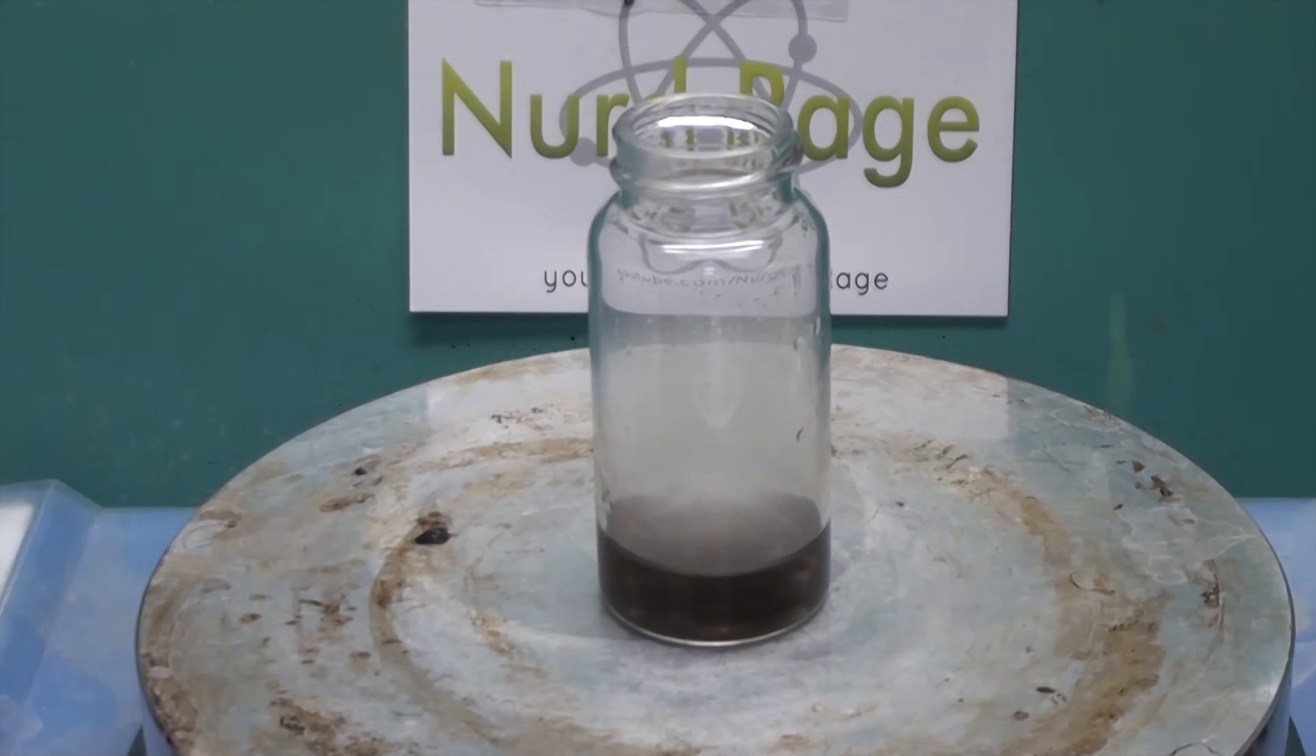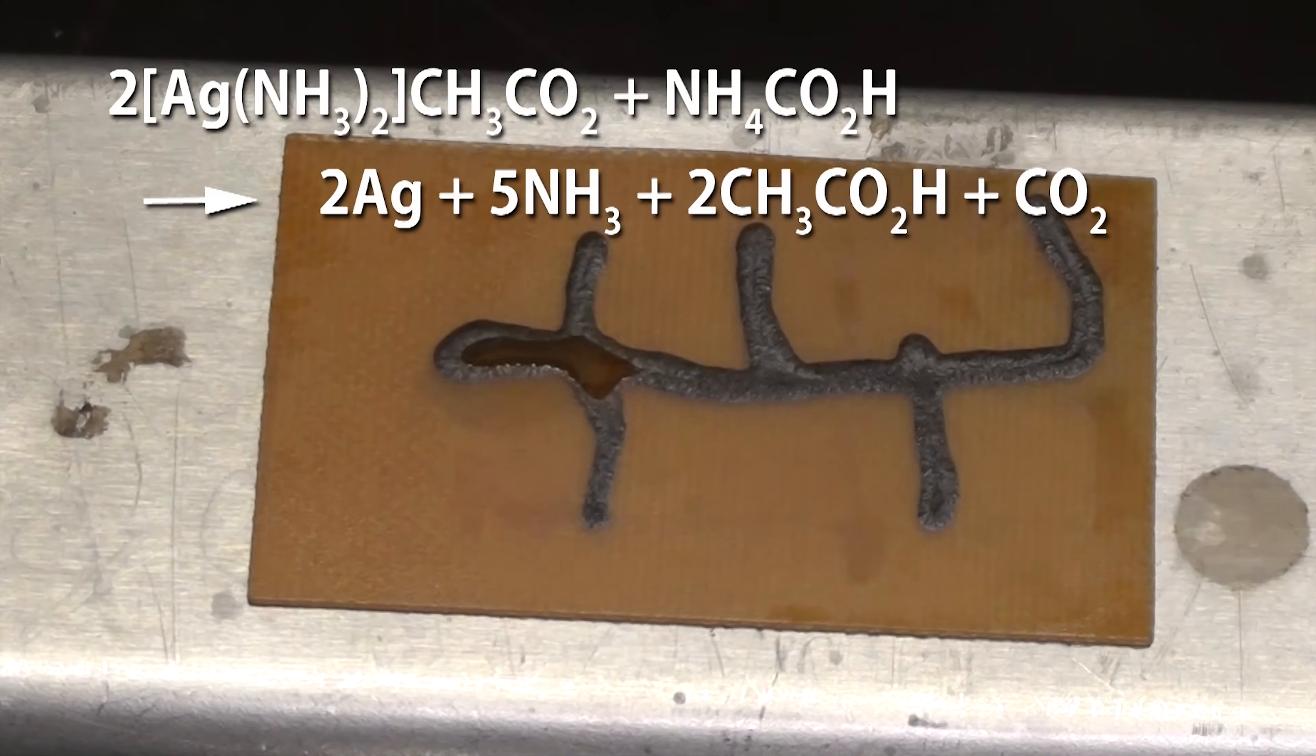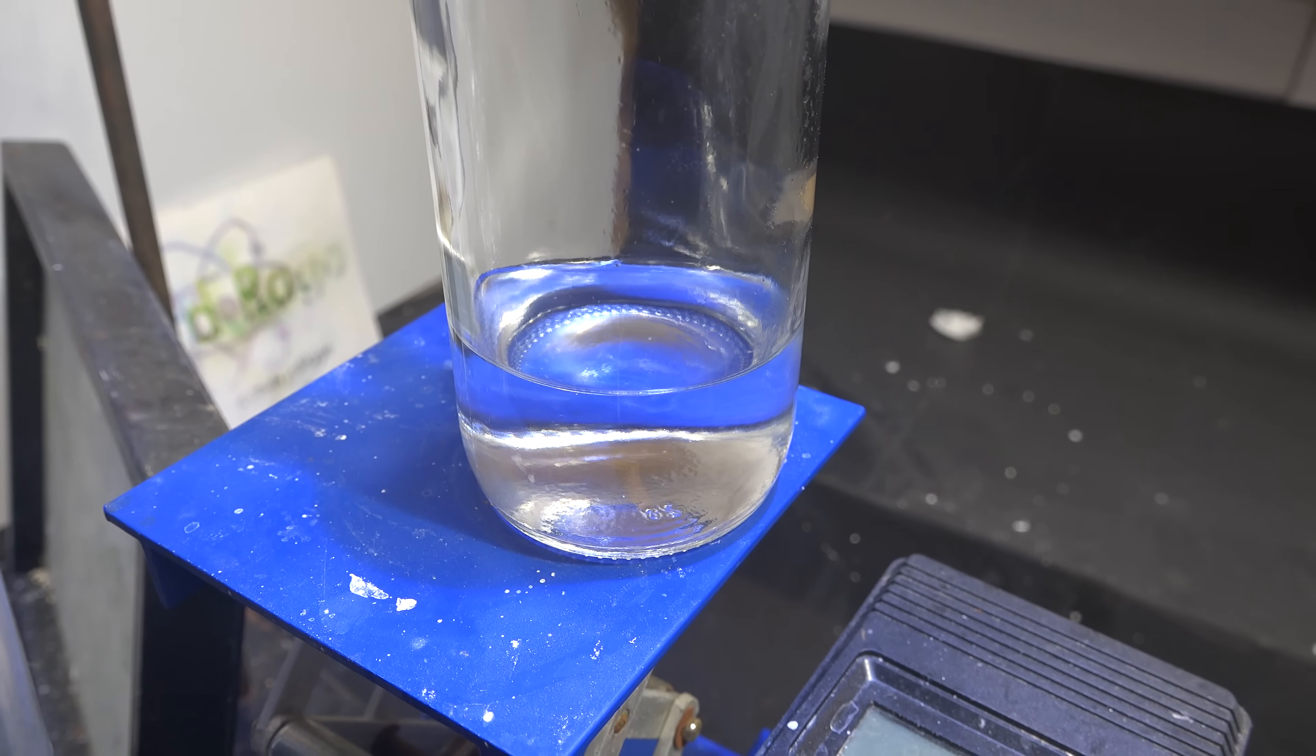Anyway, formic acid can be used to make silver conductive ink as I've shown in previous video. Thanks for watching.